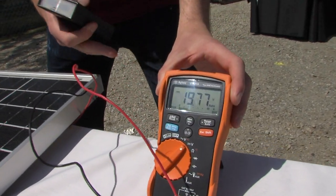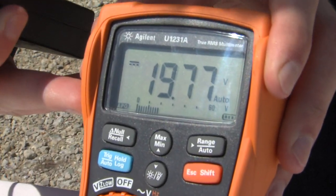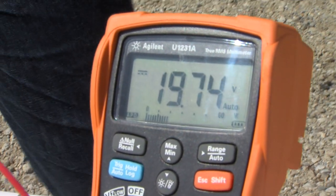voltmeter here, you can see we're getting about 20 volts open circuit coming out of this panel. What that means is it's taking the sun's energy, converting it into DC voltage, and we're reading it out right there.